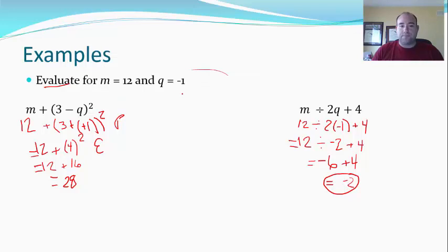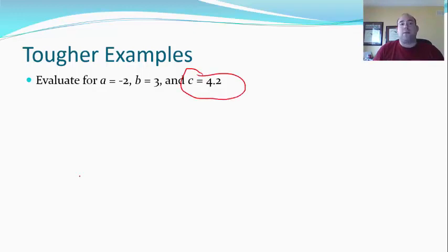All right, we have a couple more tougher examples, numbers 3 and 4 on your sheet. It's tougher because there's three variables and now I'm being a wise guy and sticking in a decimal for one of my variables. So a is negative 2, b is 3, c is 4.2, and these are the expressions we're going to evaluate. We'll look at this first one here, this is number 3 on your sheet: the quantity a squared plus 4c over 3b plus 2a. Now when you see a big expression on either the top or bottom or both of a fraction, here's what I want you to think. There's actually a hidden operation in here, and this is important for order of operations.